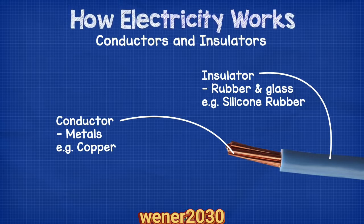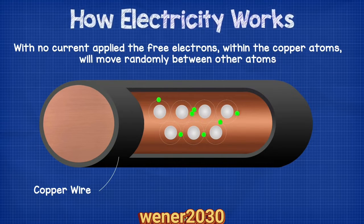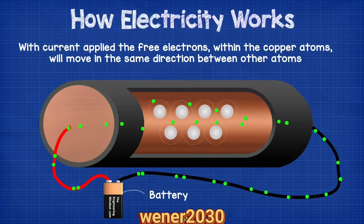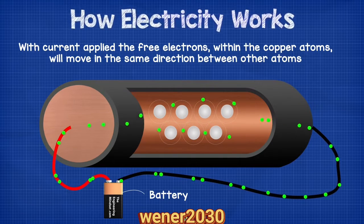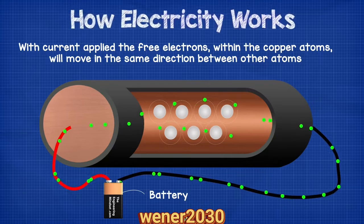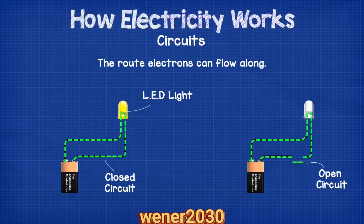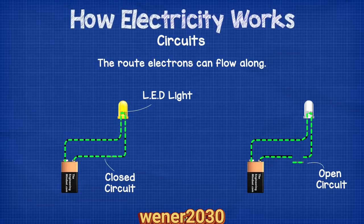If we look inside a slice of copper cable at the free electrons surrounding the nucleus of the copper atom, you'll see that the free electrons are able to move to other atoms, but this happens randomly in any direction. If we then connect the slice of copper cable to a closed circuit with a power source such as a battery, then the voltage will force the electrons to move, and these will then all flow in the same direction to try and get back to the other terminal of the battery. A circuit is just the route which electrons can flow along between the two terminals — the positive and negative of a power source.